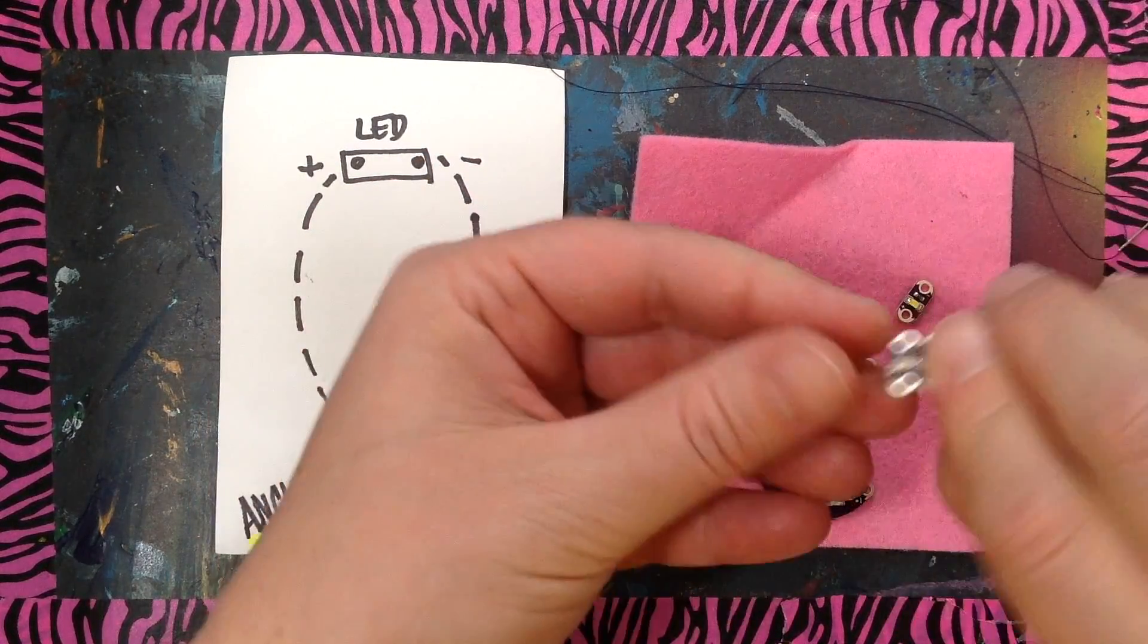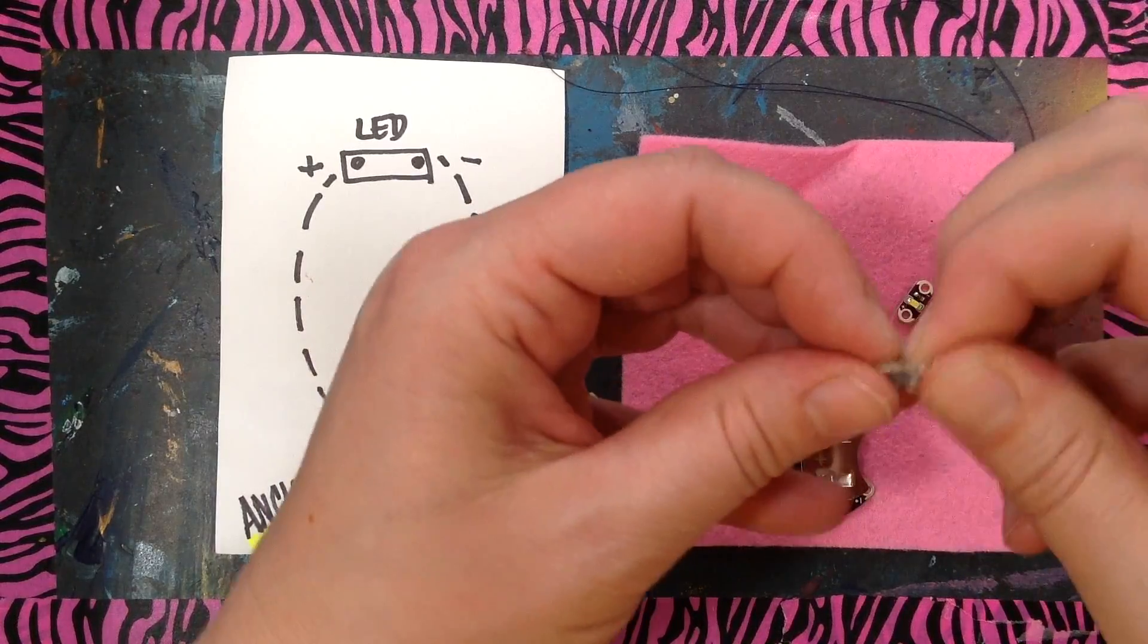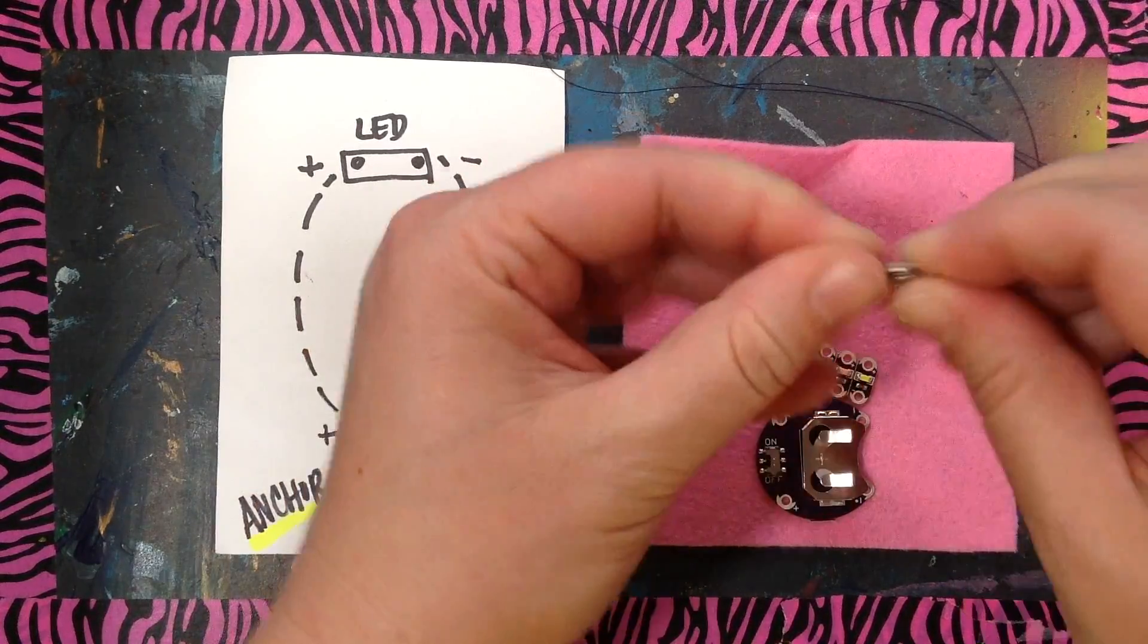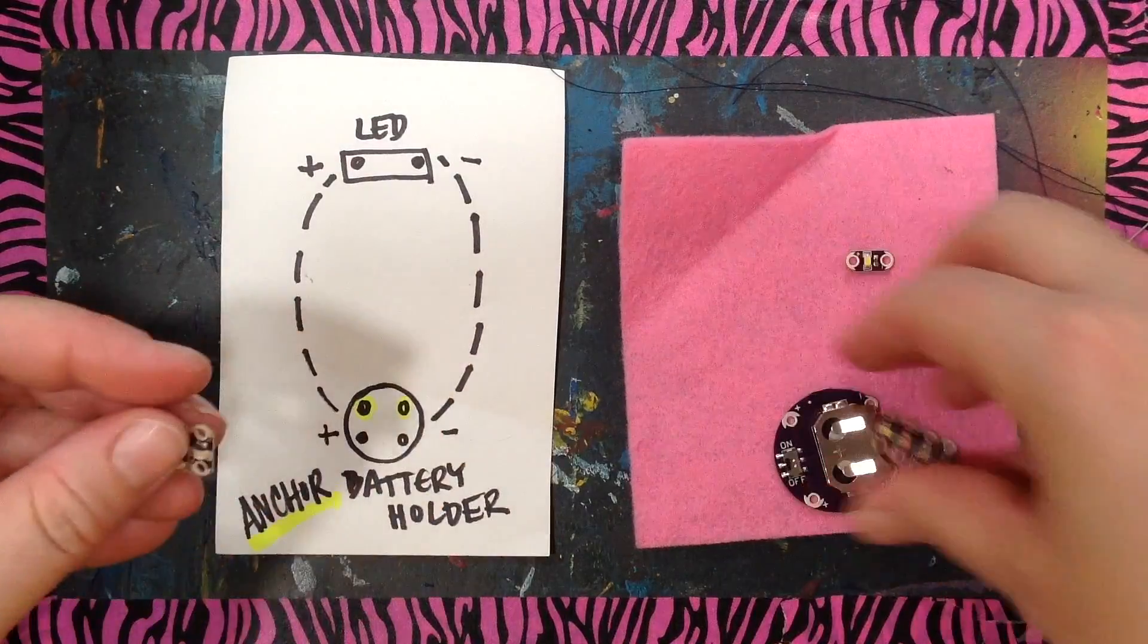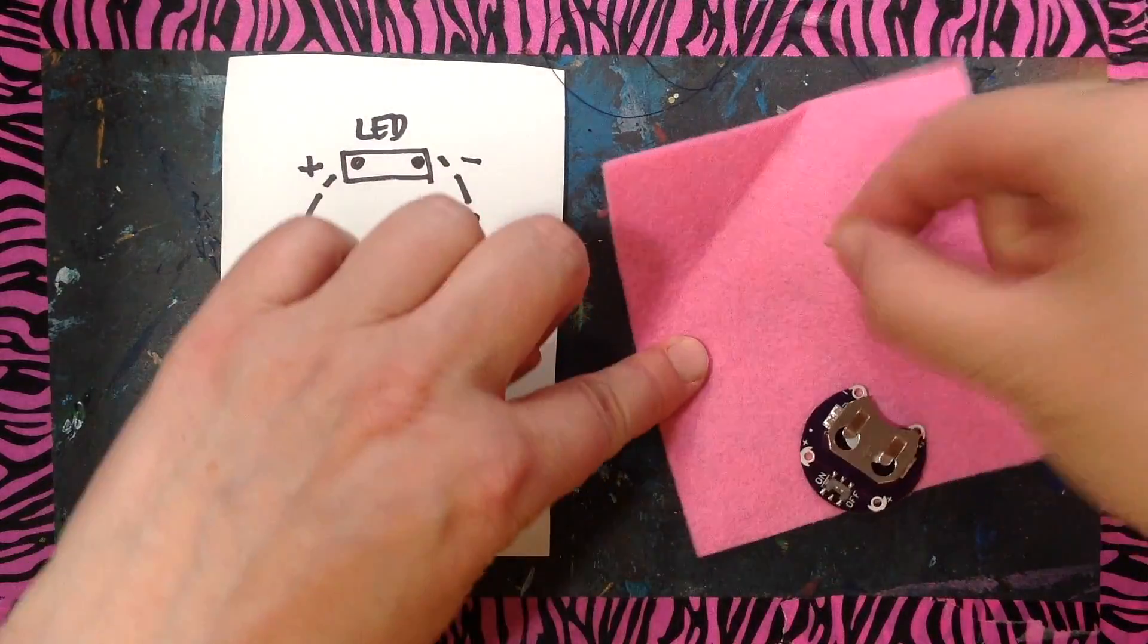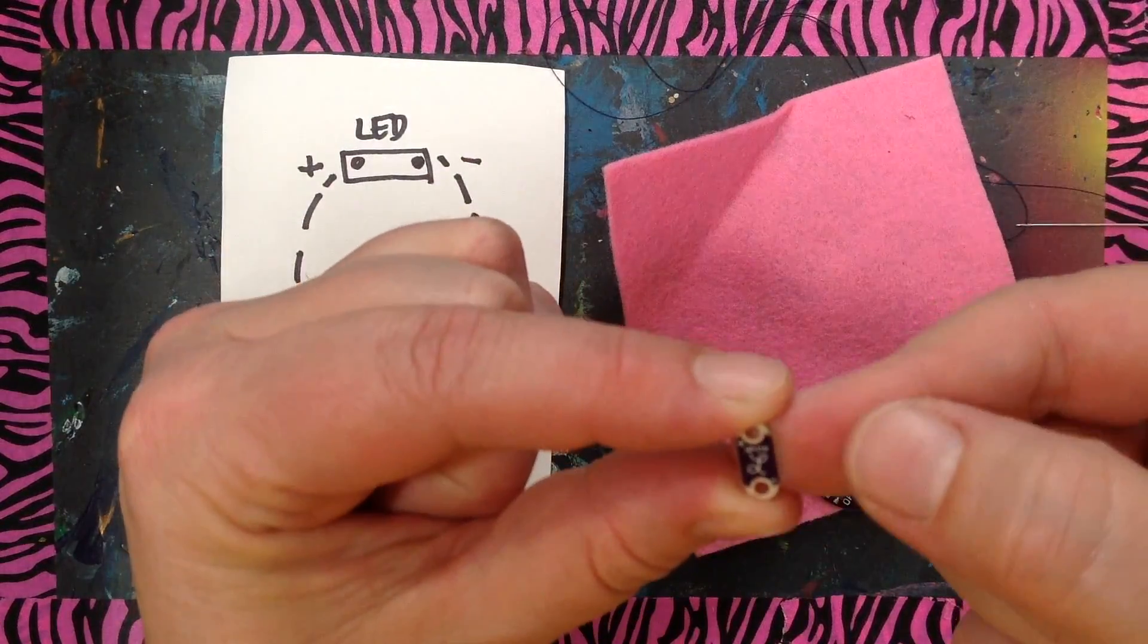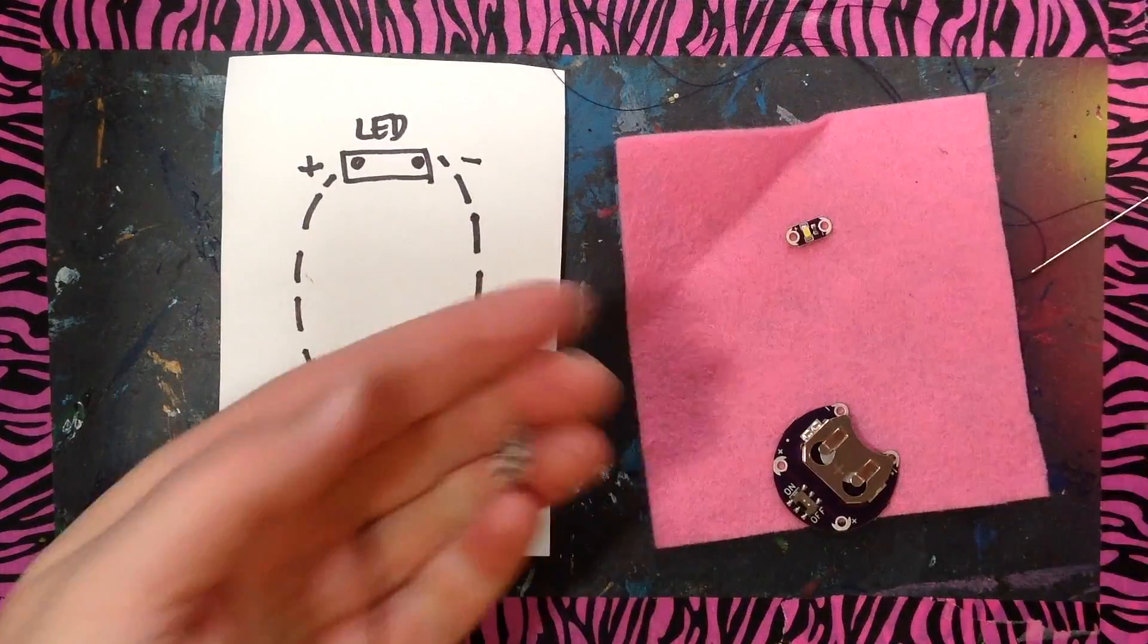They should snap. You want to be pretty gentle, but they should kind of snap apart. Maybe I'll use this one. It is the yellow, I think. Nope, that's a white. That's a white one.